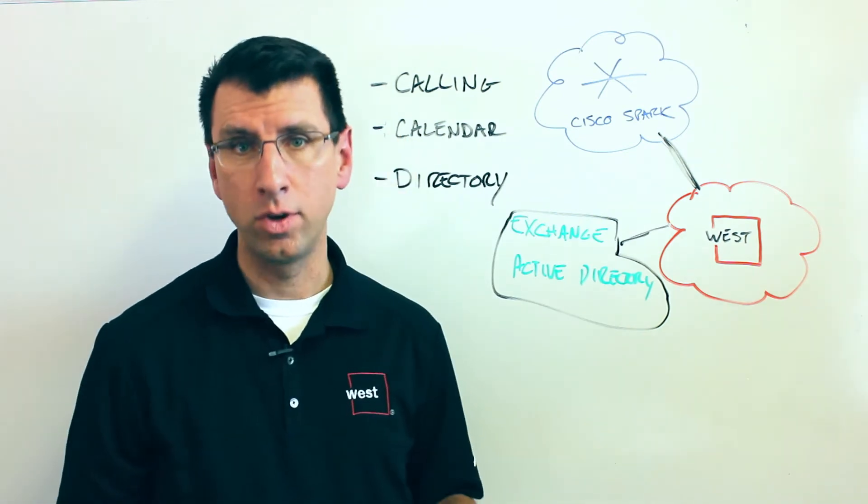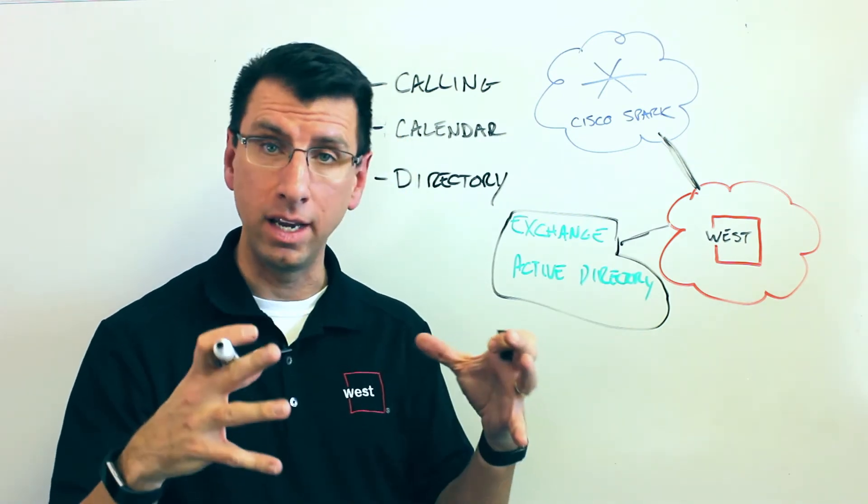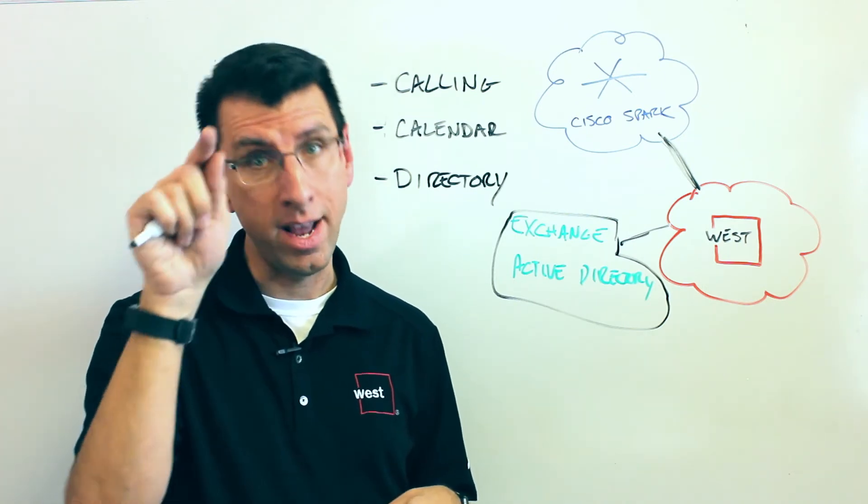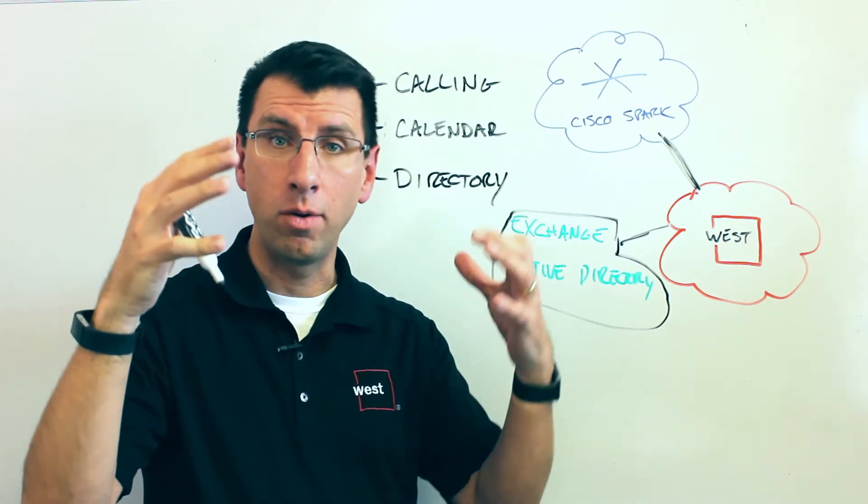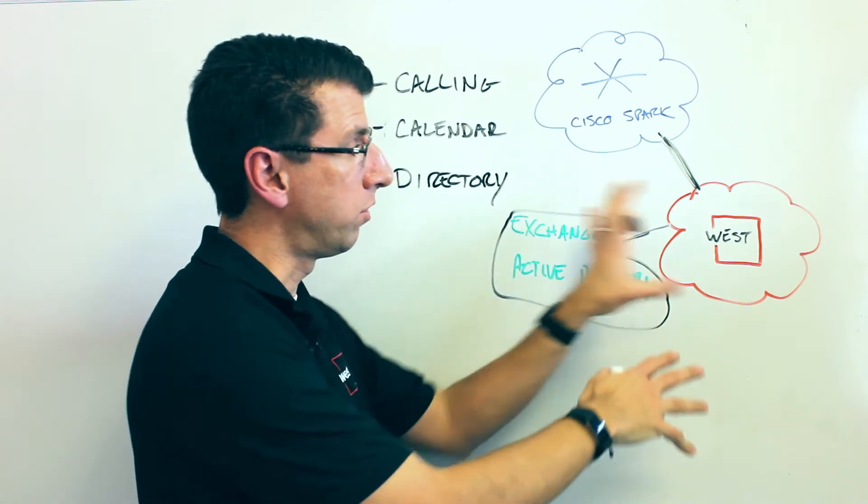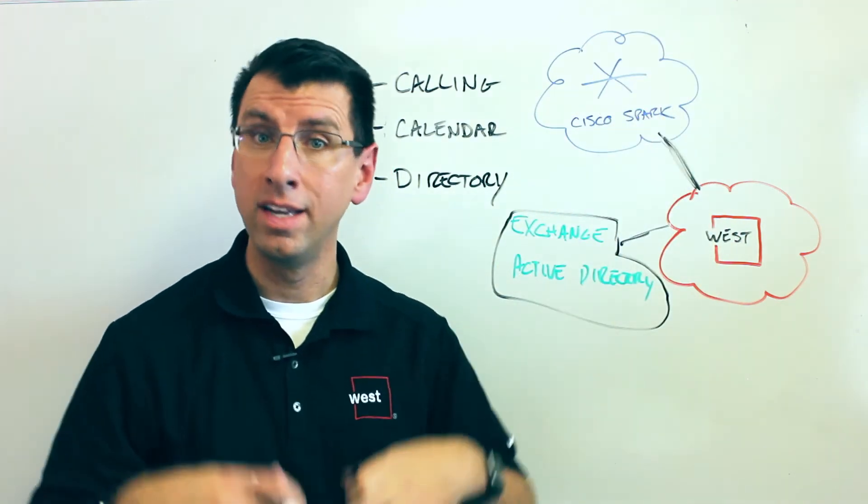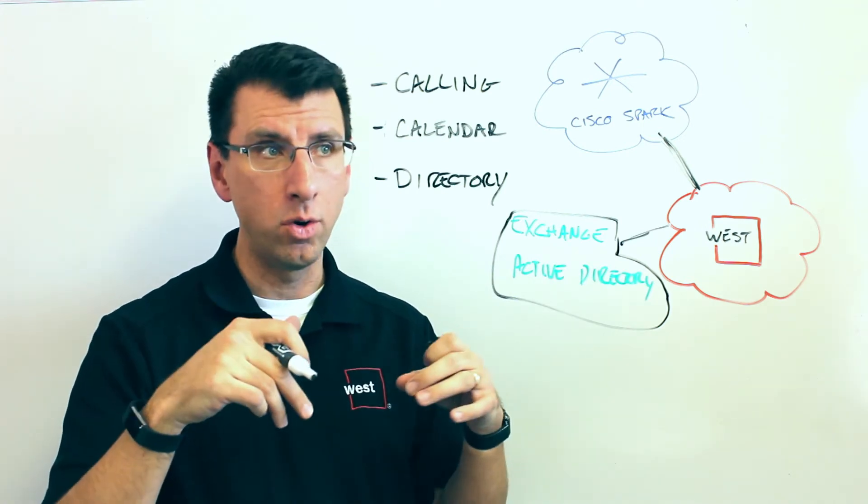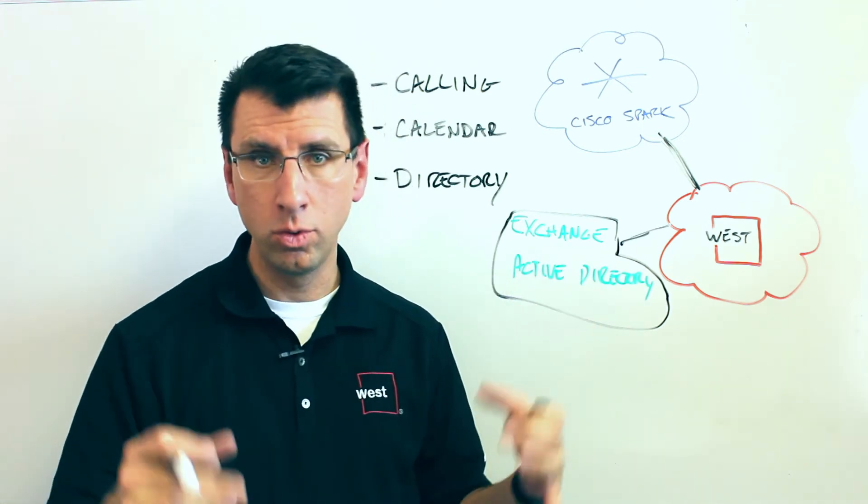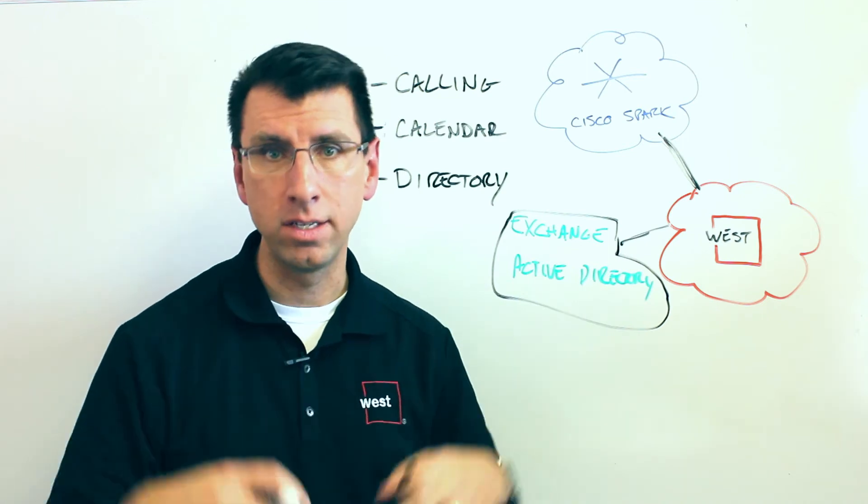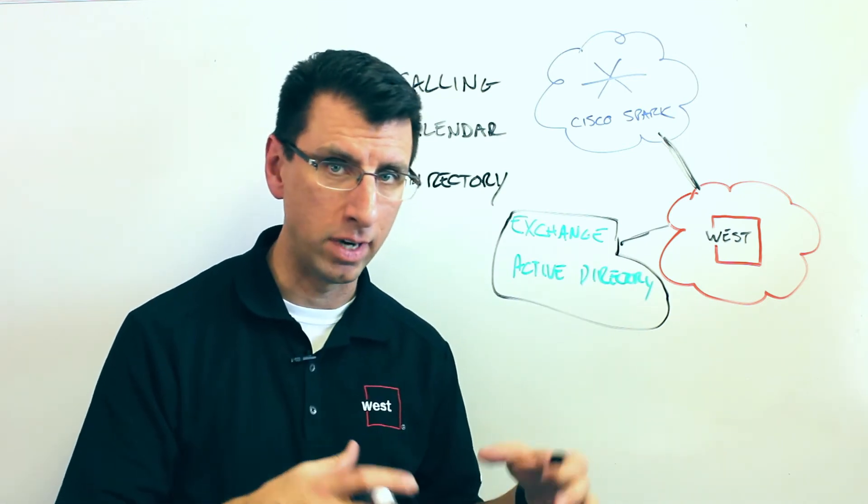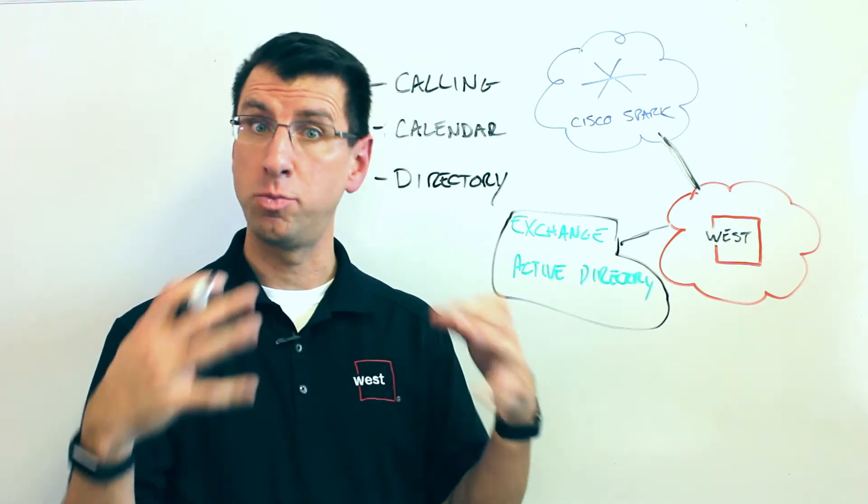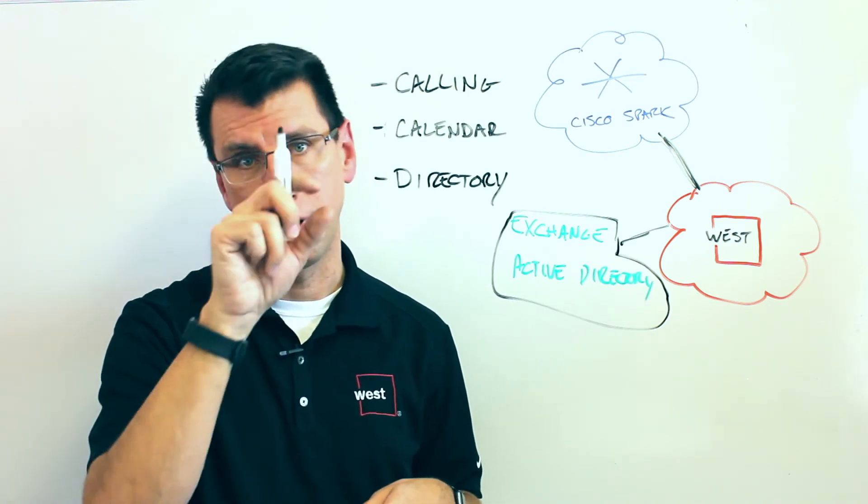The second one is calendar. So this is one where you can go into a meeting in your Outlook calendar and put in @Spark or @WebEx and that will actually talk back through your Exchange server through the West cloud into the Spark cloud to get the information that needs to be pre-populated into that meeting. So instead of you having to go and get WebEx productivity tools or type in all the information about your WebEx account or your Spark account, it just pre-populates that by you just typing @Spark or @WebEx.